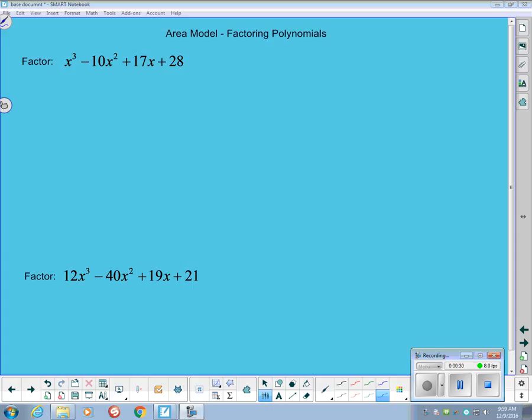The first thing that we need to do when we're looking at our first example here is we look at the 28 at the end. The rational root theorem tells me that if this has rational roots, those rational roots could possibly be plus or minus 1,